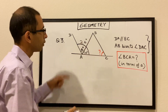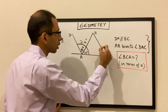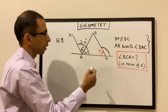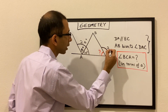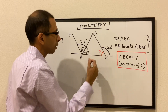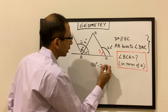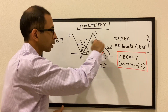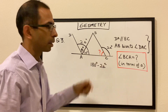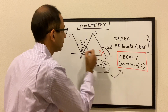Now if you see, DA is parallel to BC, hence this angle would be corresponding to this angle. These two angles are corresponding and hence equal, so this angle is also 2a degrees. Then angle BCA would be nothing but 180 degrees minus 2a degrees, because overall it forms a straight angle. Hence angle BCA is 180 minus 2a.